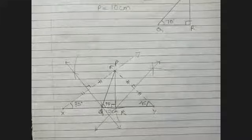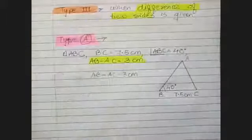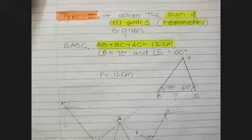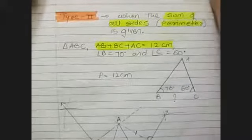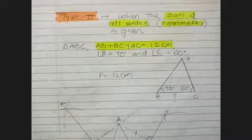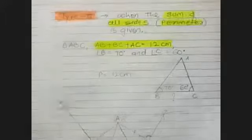Where the perpendicular bisectors cut the base are points Q and R. Join PQ and PR to get the required triangle. When you measure, angle Q will be 70 degrees and angle R will be 90 degrees. This is Type 2.